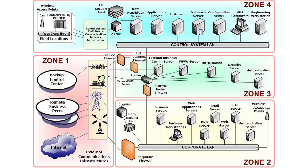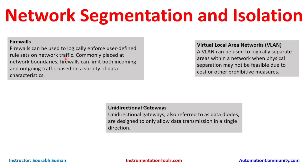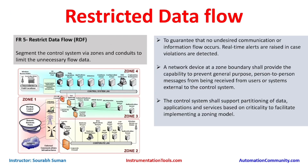This is about restricted data flow — how to build a zone model and restrict data. There are basically three things we can implement to achieve segmentation. Firewalls can be used to logically enforce user-defined rule sets for network traffic. We can create rules like: from IP address A to IP address B, allow this protocol; or if RDP is accessed from one location, allow it; or if SSH from Zone A to Zone B is attempted, deny it. We need to make multiple rules like these.